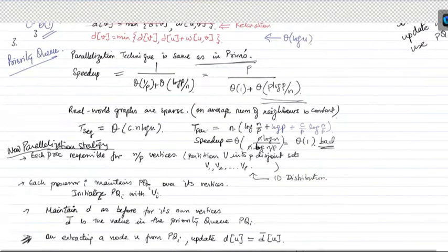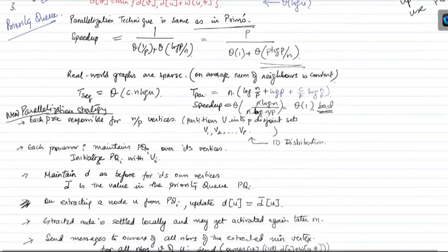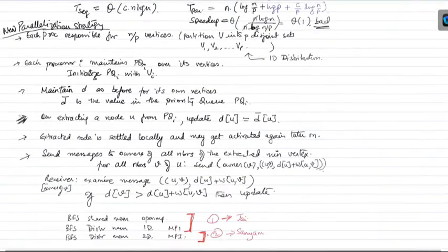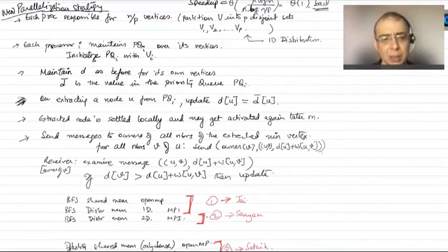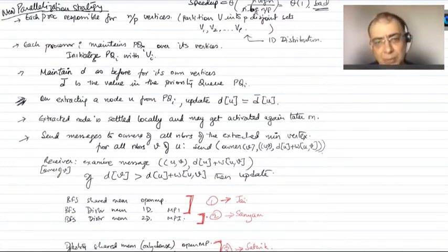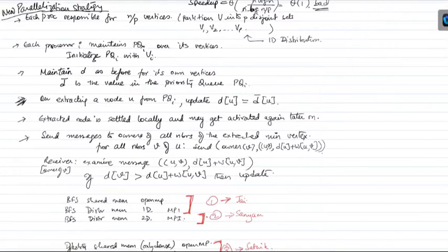Even with this, we are not going to get good speedups. We were trying to look at some new parallelization strategy which will work better, which doesn't go through N iterations. The basic problem with Dijkstra's or Johnson's is that in each iteration, only one vertex is getting settled. Unless we try to settle about P vertices, you're not going to get good speedups. The crux is to try to settle more vertices in every iteration.